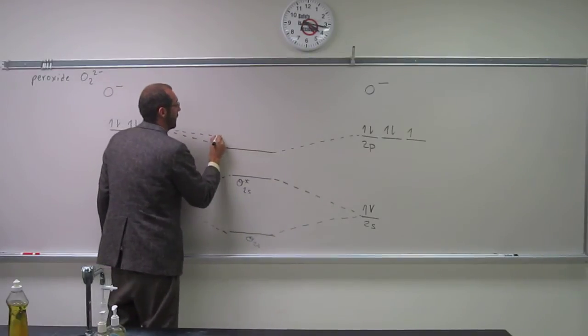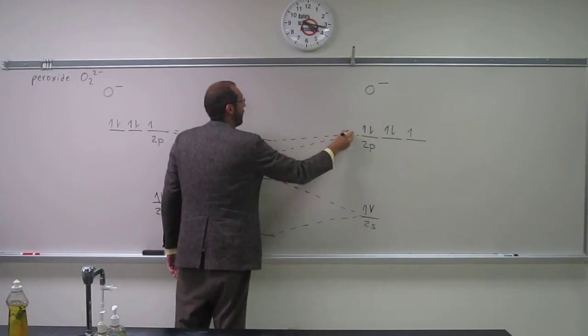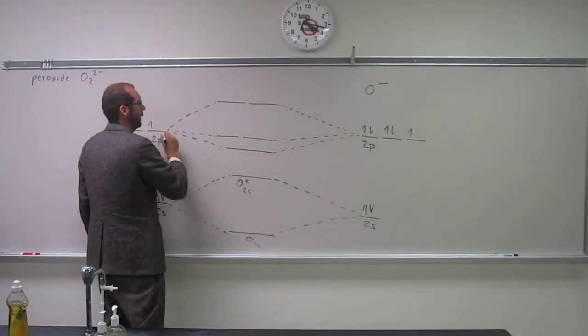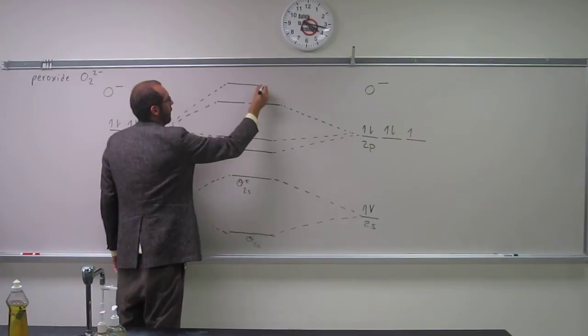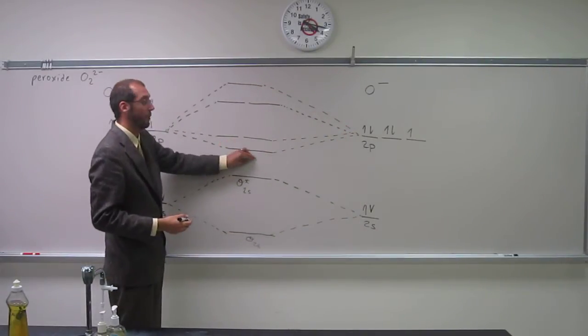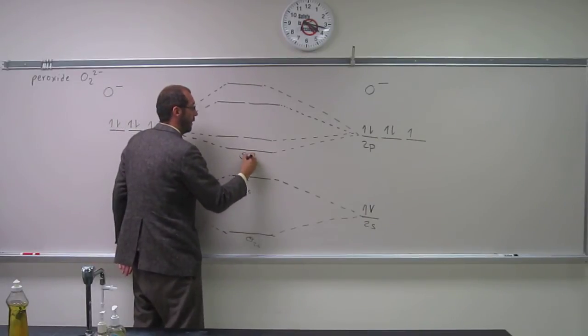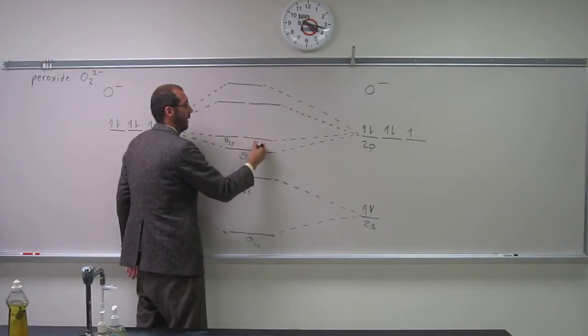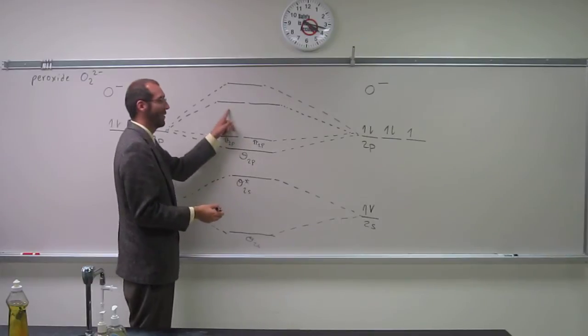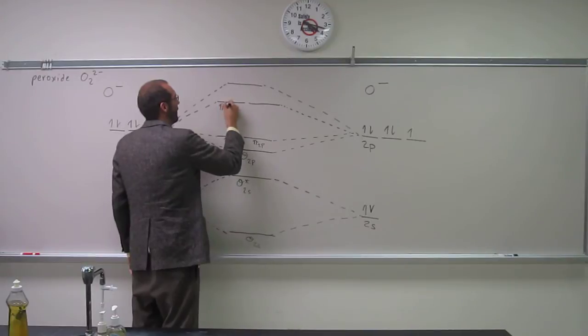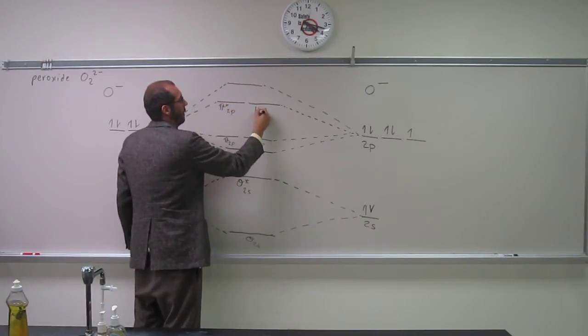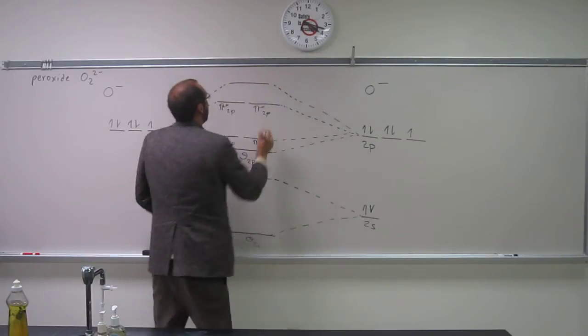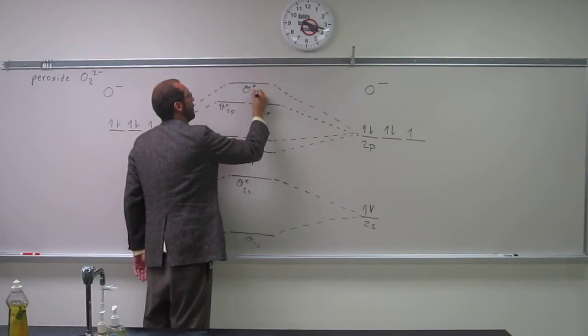And these ones are the pi. And these ones? The pi star. Very good. And then sigma star. So let's write those in. Sigma 2p. This one? Pi. This one? Pi star 2p. And then sigma star 2p.